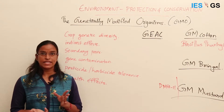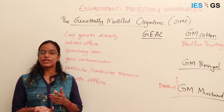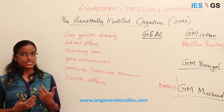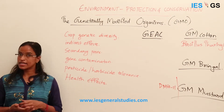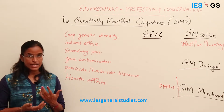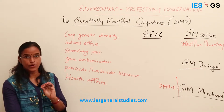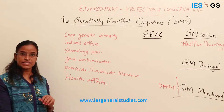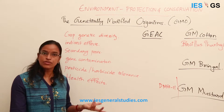Genetically modified organisms are those organisms which are modified using biotechnological techniques — that is, their genes are modified to have particular traits that we require. This is mainly used for agricultural purposes, either to increase productivity, to resist insect activity, or to achieve characteristics like drought resistance and fire resistance.